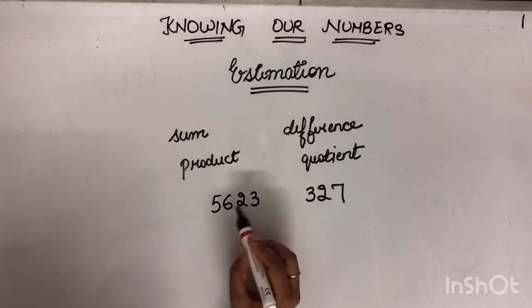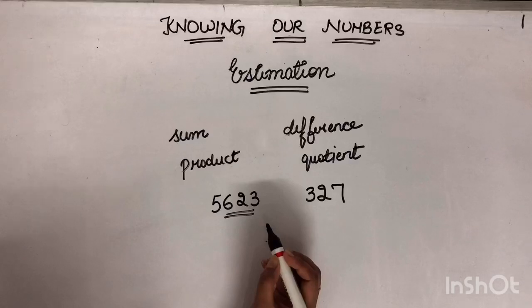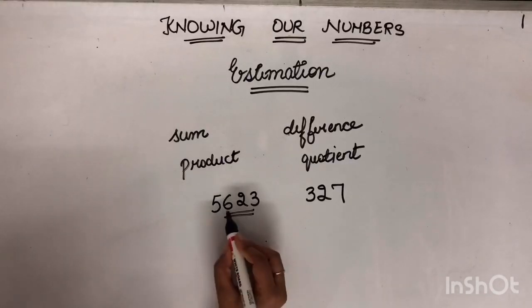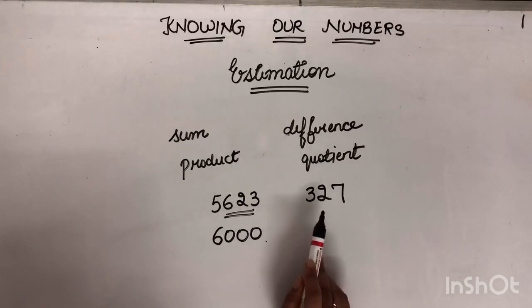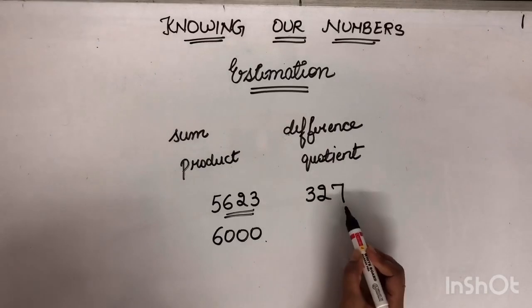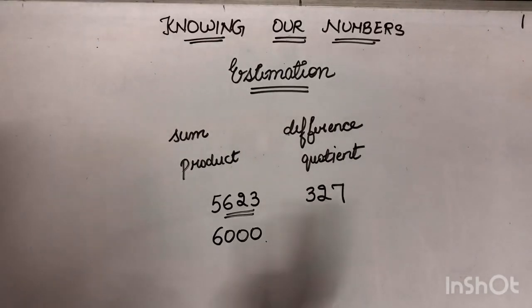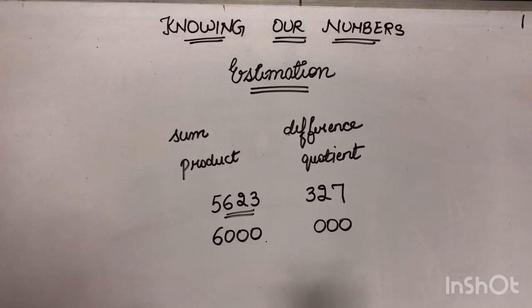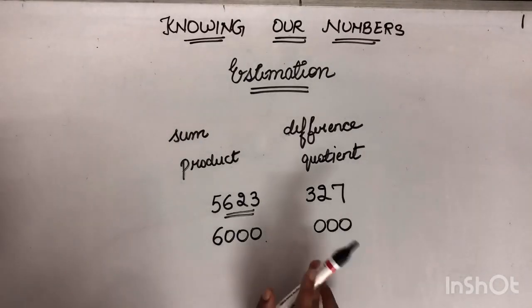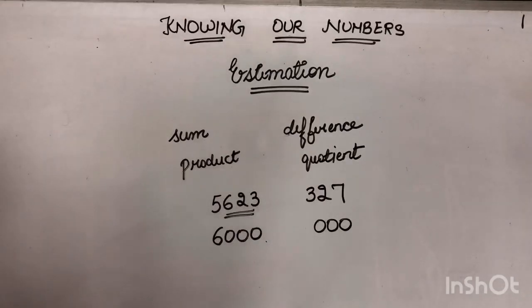For example, if I am estimating this number to nearest thousands. Thousand means how many zeros? 3 zeros. Toh this number 6 is greater than 5. It means 5 will change to 6. Toh the estimated number will be 6000. Toh it means if I have rounded off this number to nearest thousand. Then I have to round off this number also to nearest thousand. Thousand mein yaha bhi hume kitti zeros chahiyei? 3 zeros. But yaha pe already kittne digits hai? 3. Toh it means yhe poora ka poora number kya ho jayega? Zero. Which makes no sense.